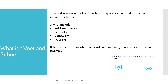Before we start this topic, let's recap a little bit. What is a VNet and subnet? Azure Virtual Network — VNet stands for Virtual Network — is a foundational capability that creates an isolated network within Azure. A VNet includes address spaces, which are IP ranges, and within that VNet you have subnets, gateways, and peering capability.